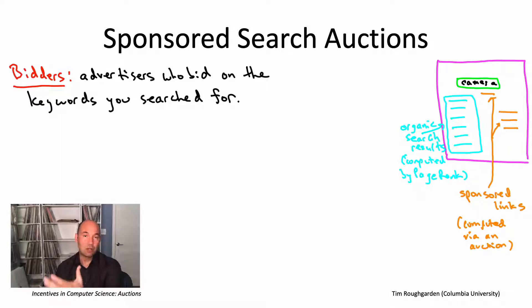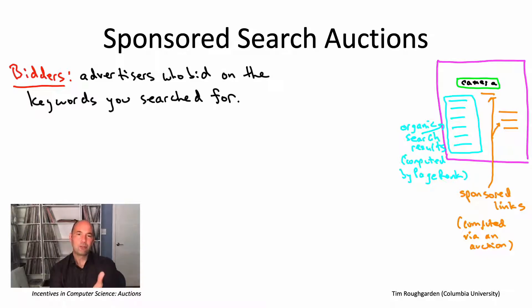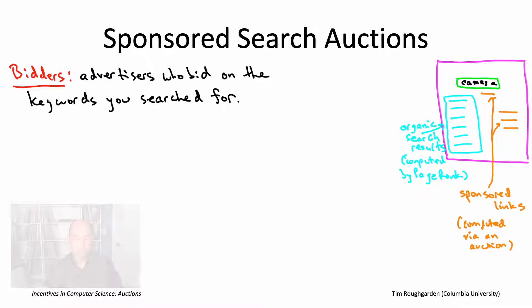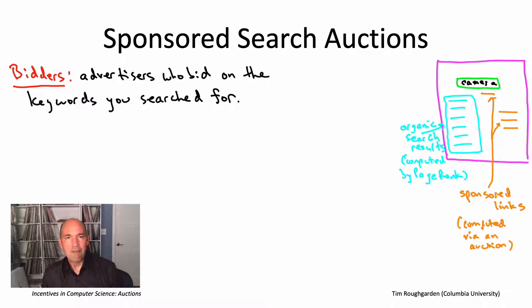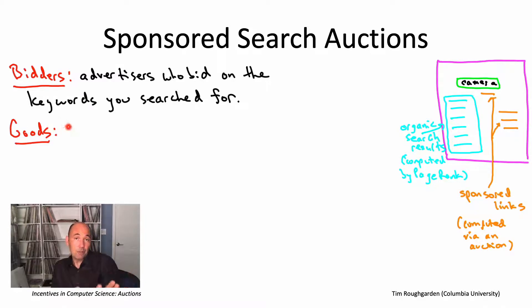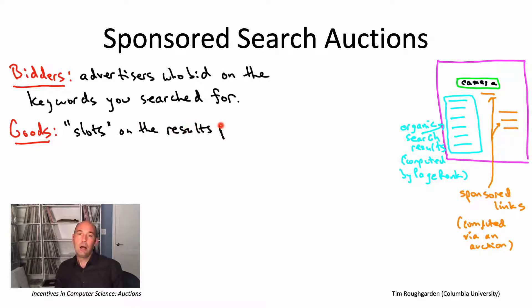The bidders are advertisers — people who want you to click on a link to take you to some landing page. A search engine like Google will have a website where you can register as an advertiser and say what keywords you want to bid on. So in our running example where "camera" is the keyword, you'd expect a company like Nikon to submit a bid on that keyword, saying please show my ad whenever someone searches for "camera." Those are the bidders in a sponsored search auction: advertisers who have expressed interest in having their sponsored links shown for particular keywords.